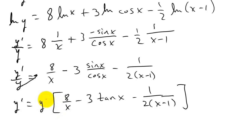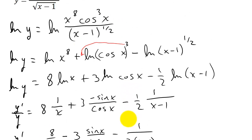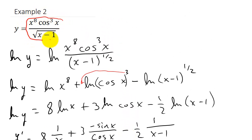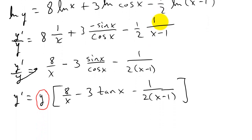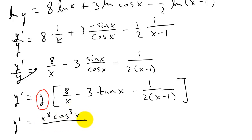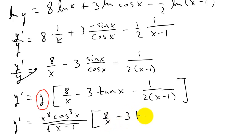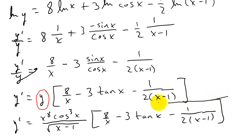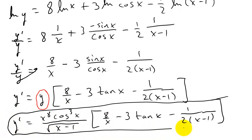Now we have to get everything in terms of x. What does y equal? Well, y equals x to the 8th cosine cubed x over the square root of x minus 1. So we plug that in for y: y prime equals x to the 8th cosine cubed x over the square root of x minus 1, times 8 over x minus 3 tangent x minus 1 over 2 times x minus 1. And this would be your final answer.